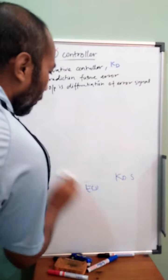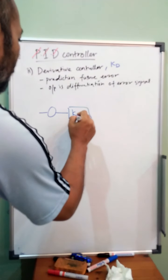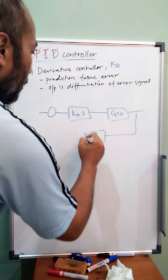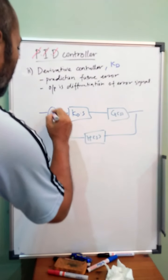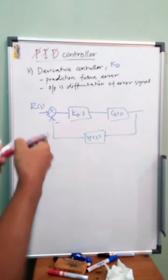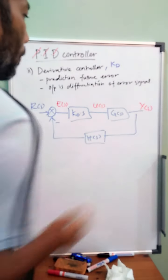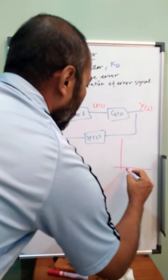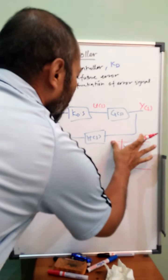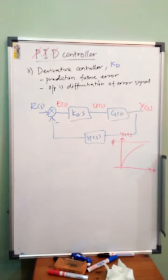So we can draw the block diagram. Reference, summation, error e(s), Kd times s, u(s), then G(s), output y(t). This is our error, this is output, feedback from the previous output.